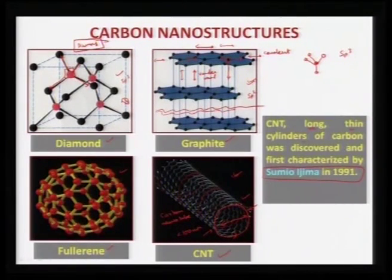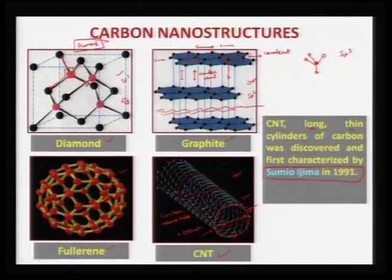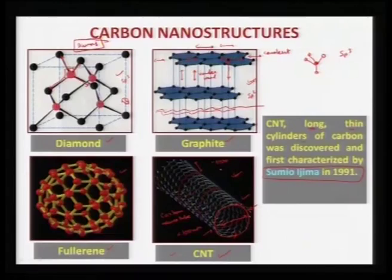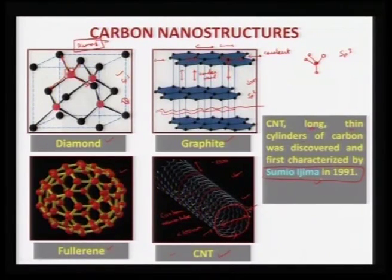Fullerene is composed of certain pentagons and hexagons that complete a soccer ball–type structure. Carbon nanotubes are long and thin cylinders with aspect ratios — the length-to-diameter ratio — as high as 1000 or more, and they were discovered by Sumio Iijima in 1991. That is how the carbon nanostructures are developed.